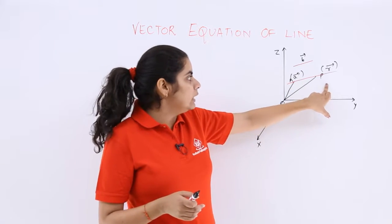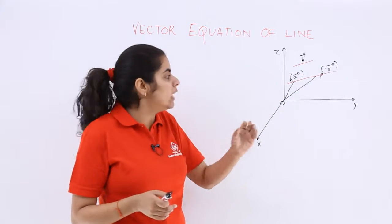We have a, p and b. Now what is this a, p and b?